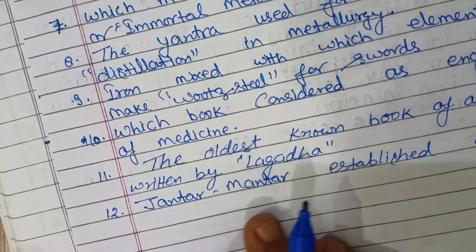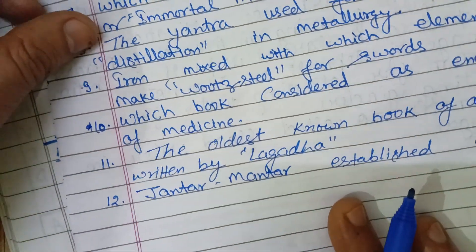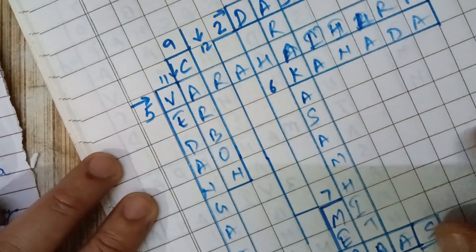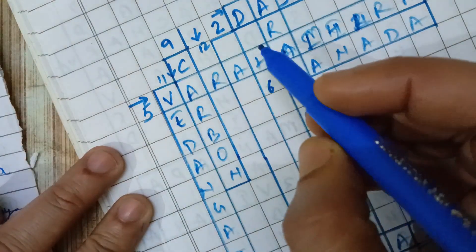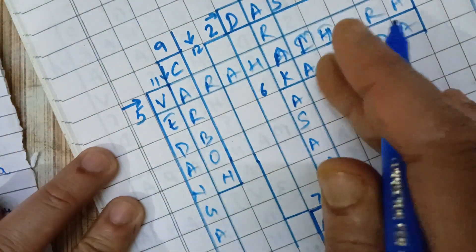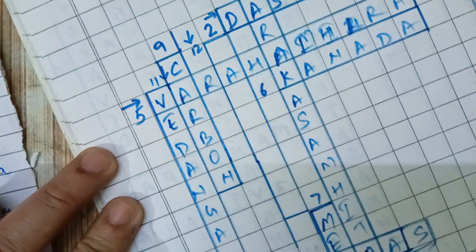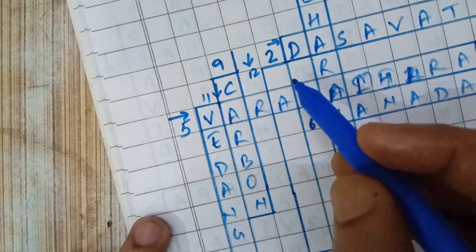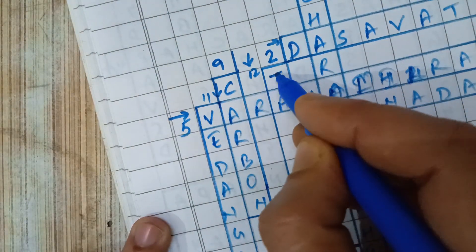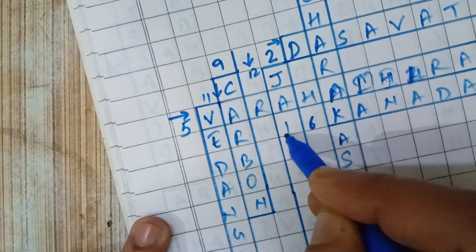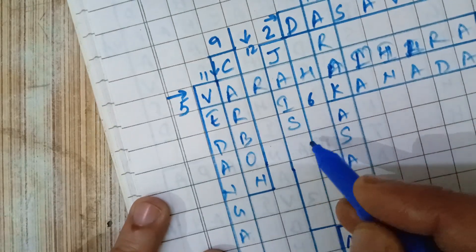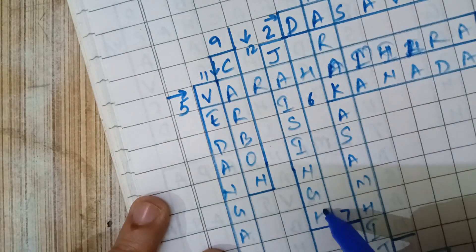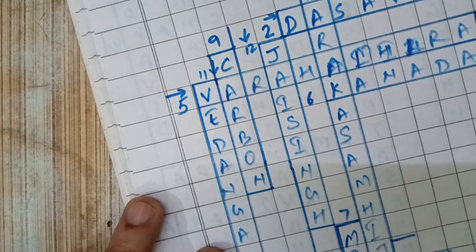Twelfth downward: Jantar Mantar was established by whom? The answer is Jai Singh — J-A-I-S-I-N-G-H.